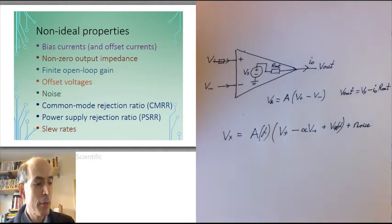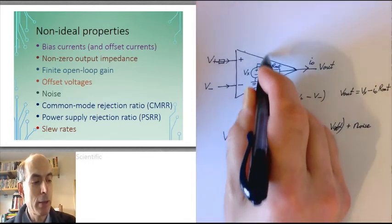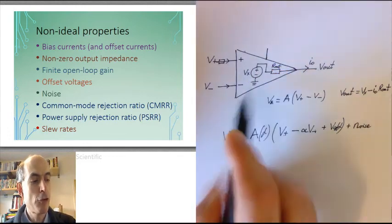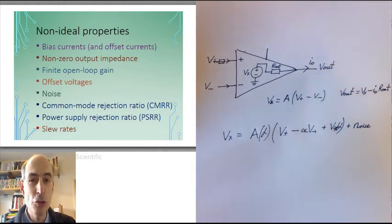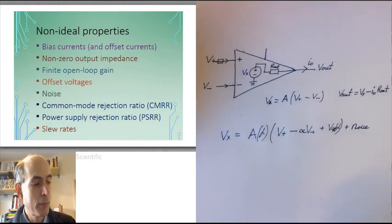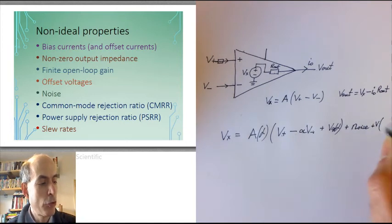Finally, the output of an op-amp is dependent on the power supply itself. If you change the power supply from, say, three volts to four volts, then the output would change slightly. So we can represent that by adding another term of voltage, which is a function of the power supply voltage.